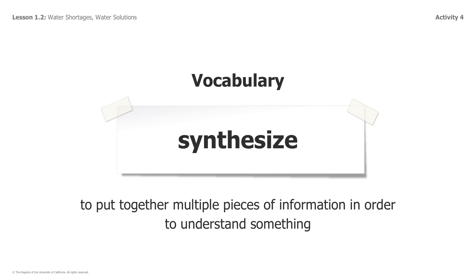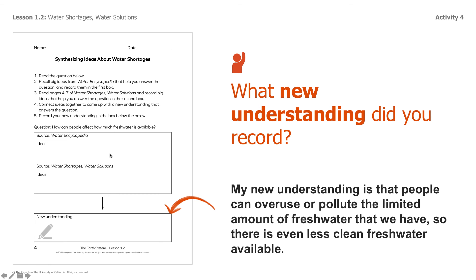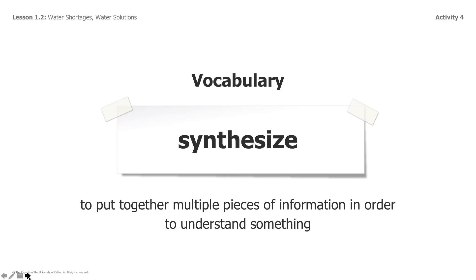This is an important vocabulary word — jot this down in your notes: synthesize. Synthesize is a word that means to put together multiple pieces of information in order to understand something. For the work that we just did, we put together information from Water Encyclopedia about how there's not a lot of fresh water, and the idea from Water Shortages and Water Solutions that humans are overusing or polluting this fresh water. Then we came up with the synthesis — our new understanding: people are overusing or polluting the small amount of fresh water, so there's even less clean fresh water available. Pause it and jot it down in your notes.